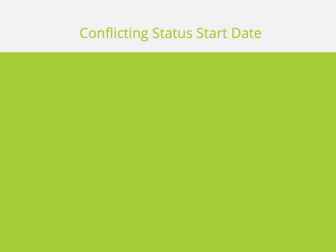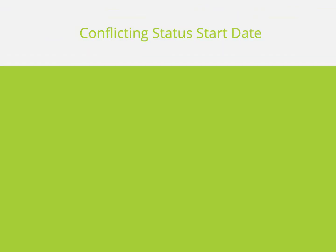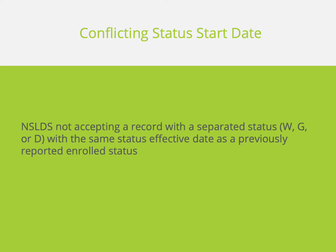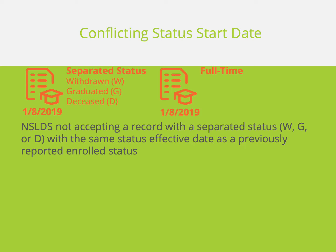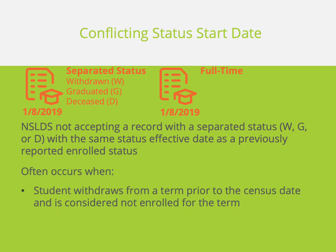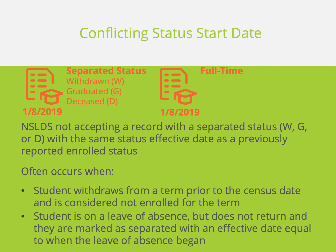The next scenario for Error 32 is conflicting status start dates. The error occurs in this situation due to NSLDS not accepting a record with a separated status with the same status effective date as an enrolled status that was previously reported. There are two main instances where this error will occur: the first is for students who withdraw prior to the census date and are not considered enrolled for the term, but the enrollment status was sent to NSLDS prior to the student withdrawing; and second is for students who are on a leave of absence and did not return.